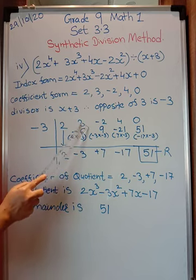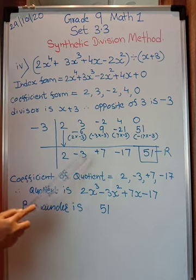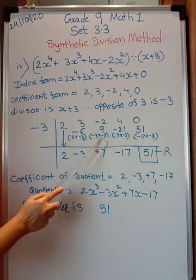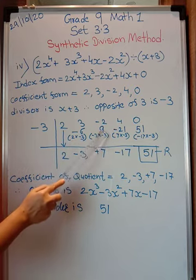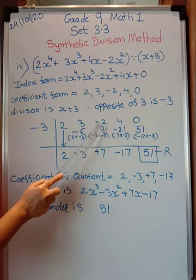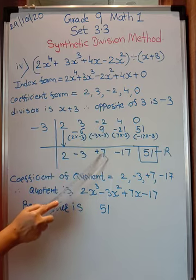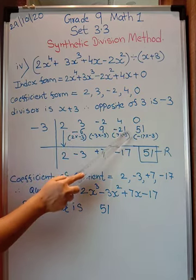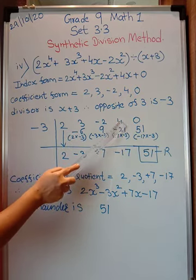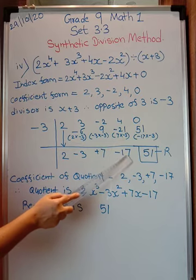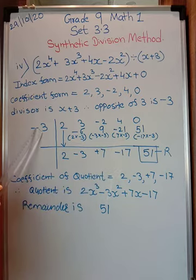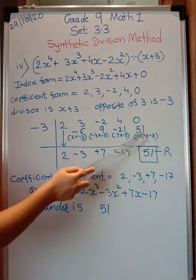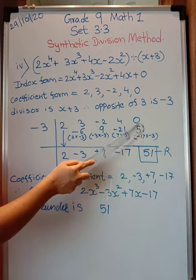Minus 6 plus 3 gives minus 3. Again, multiply minus 3 into minus 3, which gives 9. Then 9 plus minus 2 gives plus 7. Again multiply: 7 into minus 3 is minus 21. Minus 21 plus 4 is minus 17. Again minus 17 into minus 3 gives 51. And 51 plus 0 is 51.